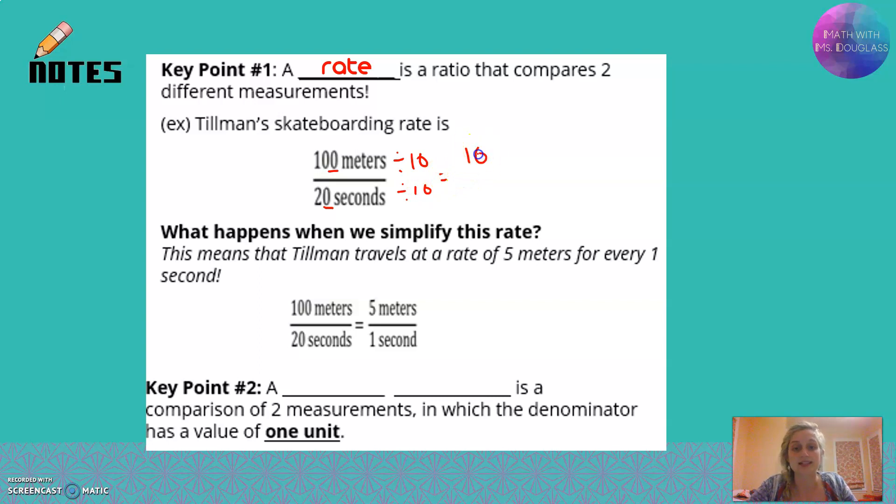100 divided by 10 is 10. 20 divided by 10 is 2. Then it might be easier for me to be like, oh wait, I can definitely divide those both by 2. Divide by 2, divide by 2. That's 5 over 1. That 1 is super important. That's what makes it what's called a unit rate.